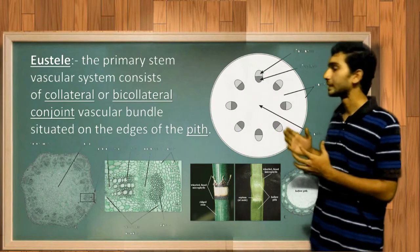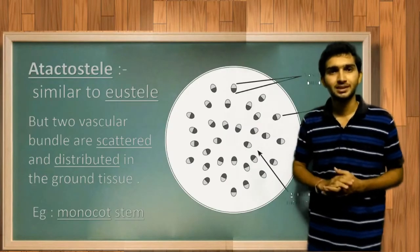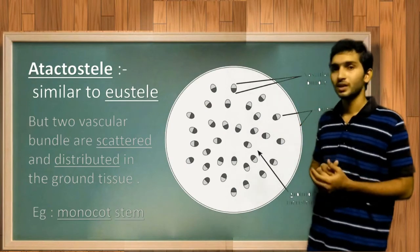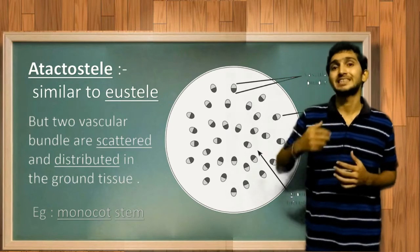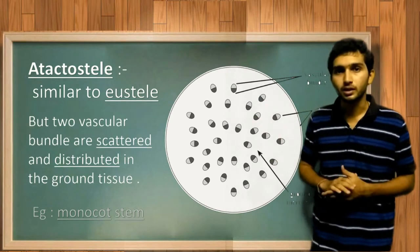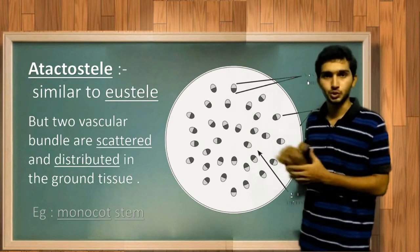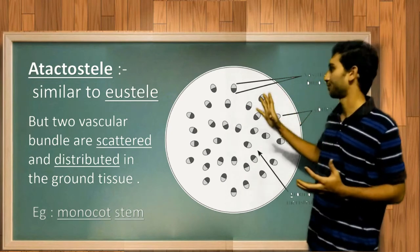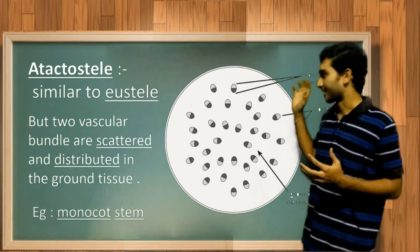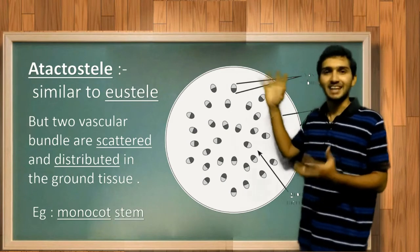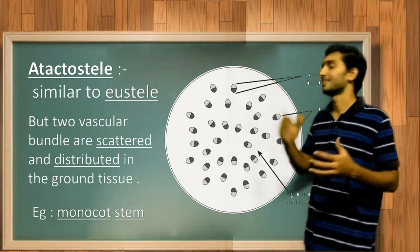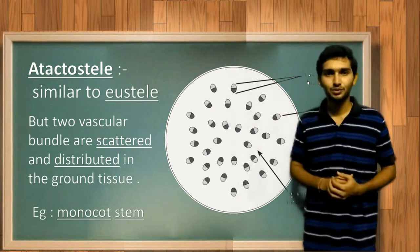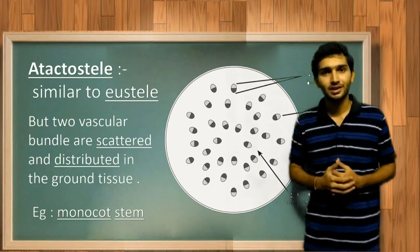Atactostele is similar to eustele, but the vascular bundles are scattered and distributed throughout the ground tissue rather than arranged in a ring. An example is monocot stems, where we can find these bundles arranged in a scattered manner. This concludes the types of stele.